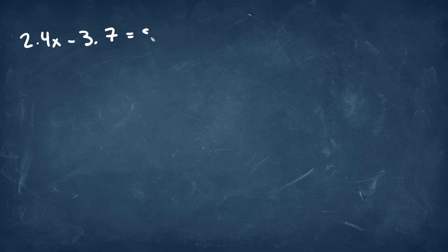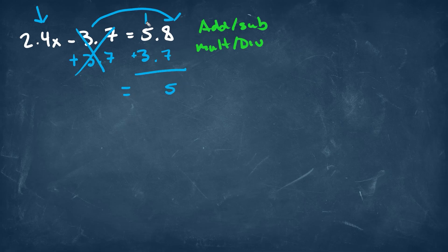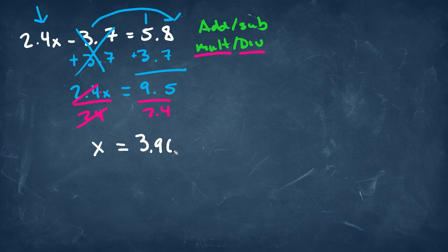Now what if you had decimals for each one of these values? Well, we would do the exact same thing. We always start with addition and subtraction, then go into multiplication and division. Since our x variable is on the left side, we're going to move all of our numbers over to the right side. We have minus 3.7, so we'll add 3.7 on both sides. When we do this, it's going to cancel out on the left. Adding those two numbers together gives us 9.5, and that will be equal to 2.4x. Now we have 2.4 times x, which is multiplication, so we're going to divide by 2.4 on both sides. We'll be left with x equal to 3.96. And that will be our final answer.